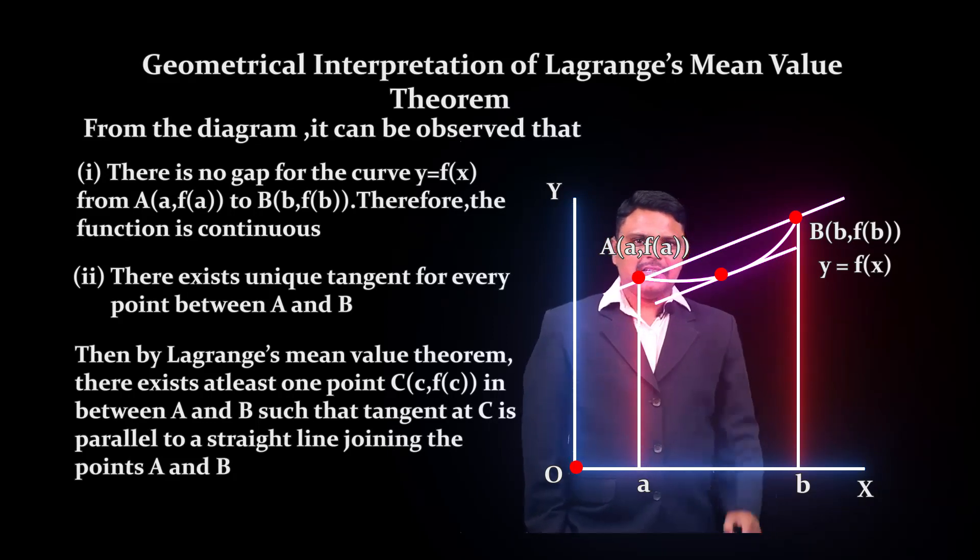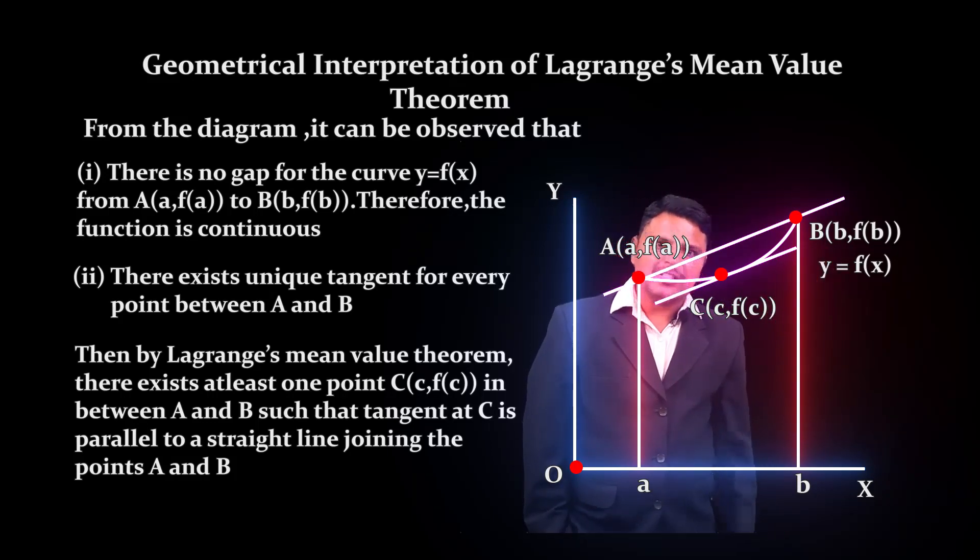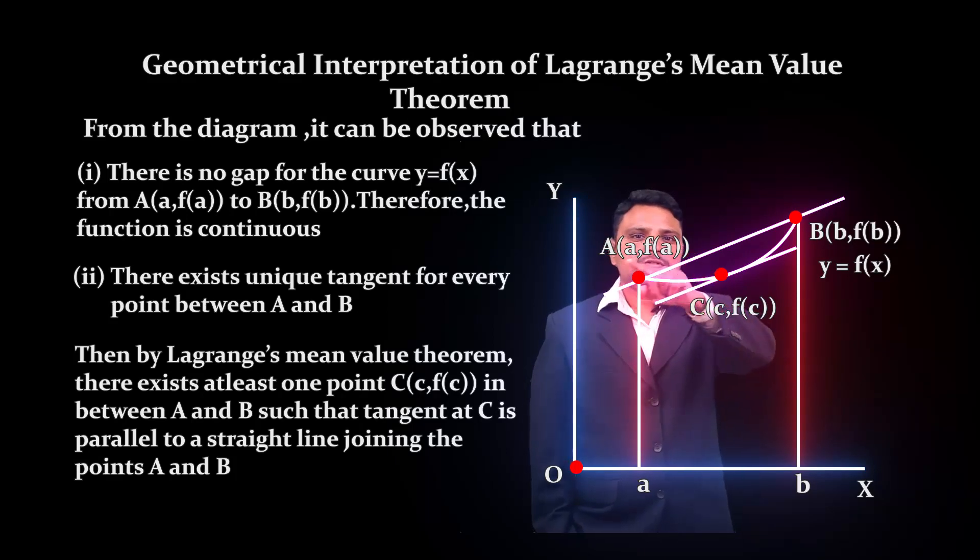At that point, we are getting one tangent line. The tangent line is parallel to the line joining points A and B. Observe this: the line AB and the tangent line at C are both parallel lines.